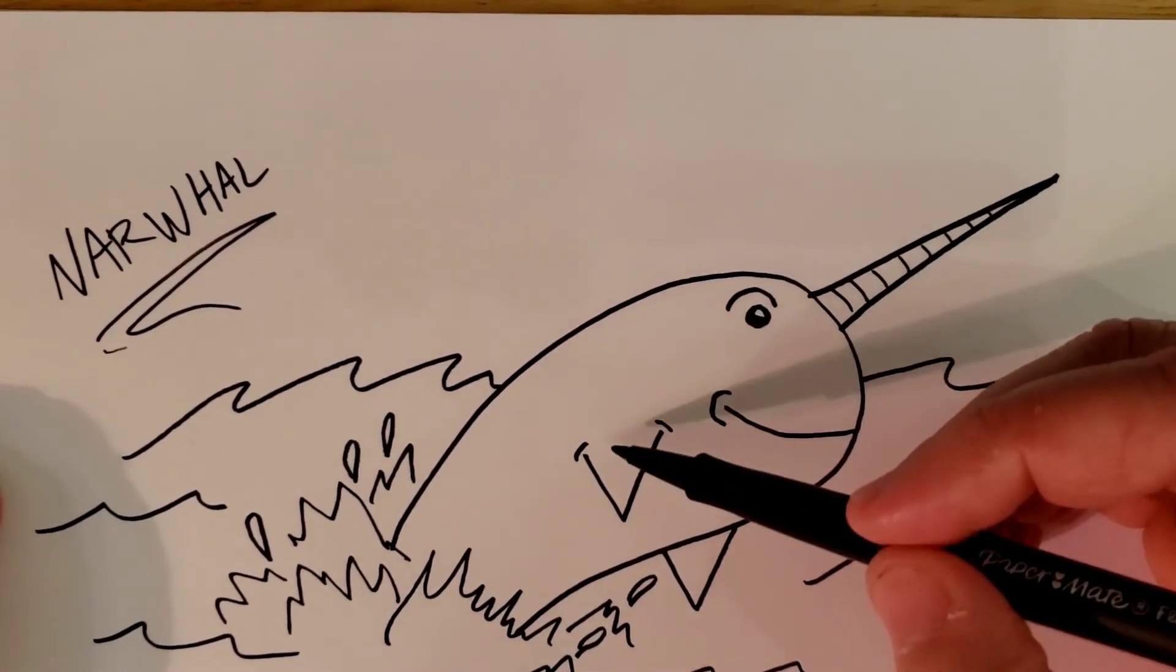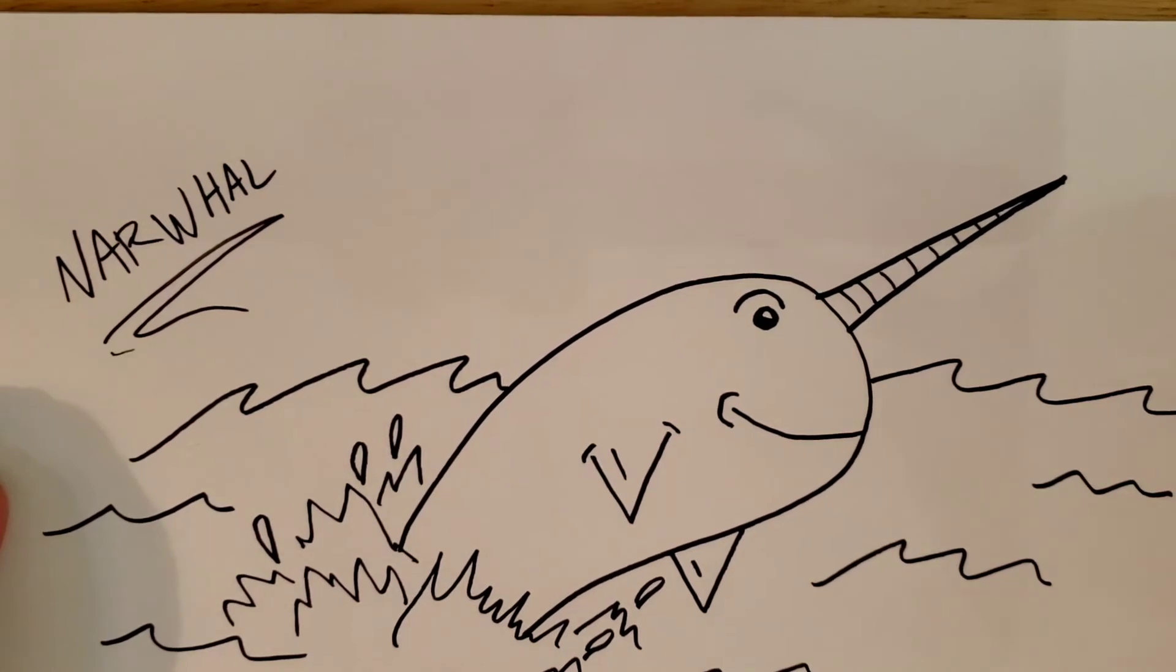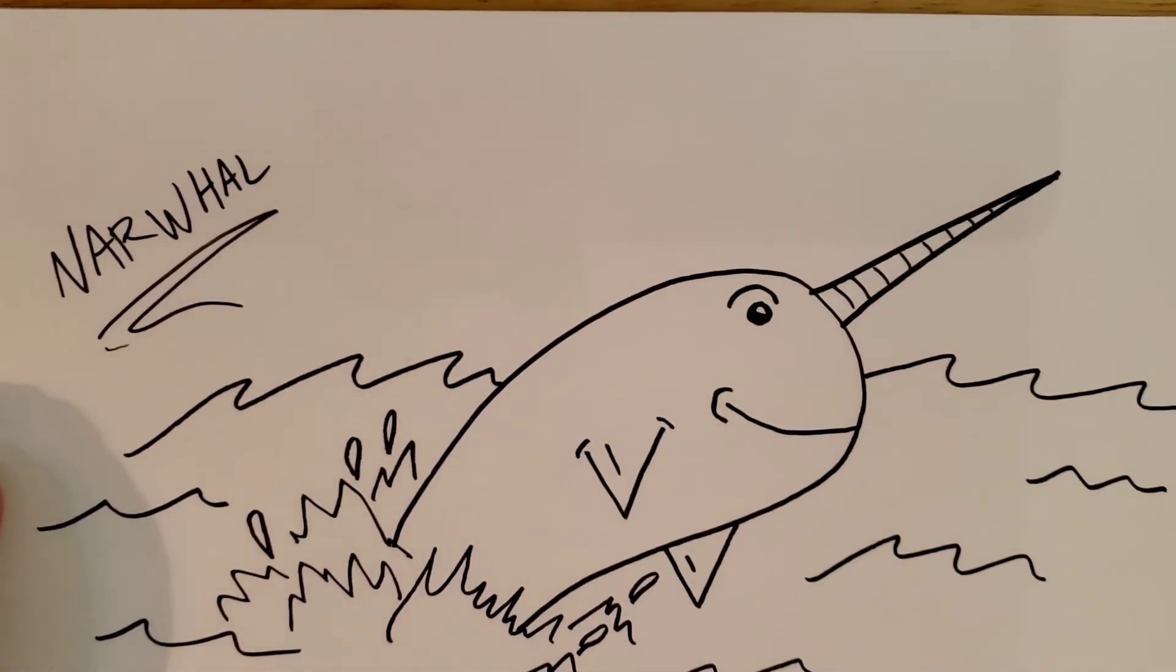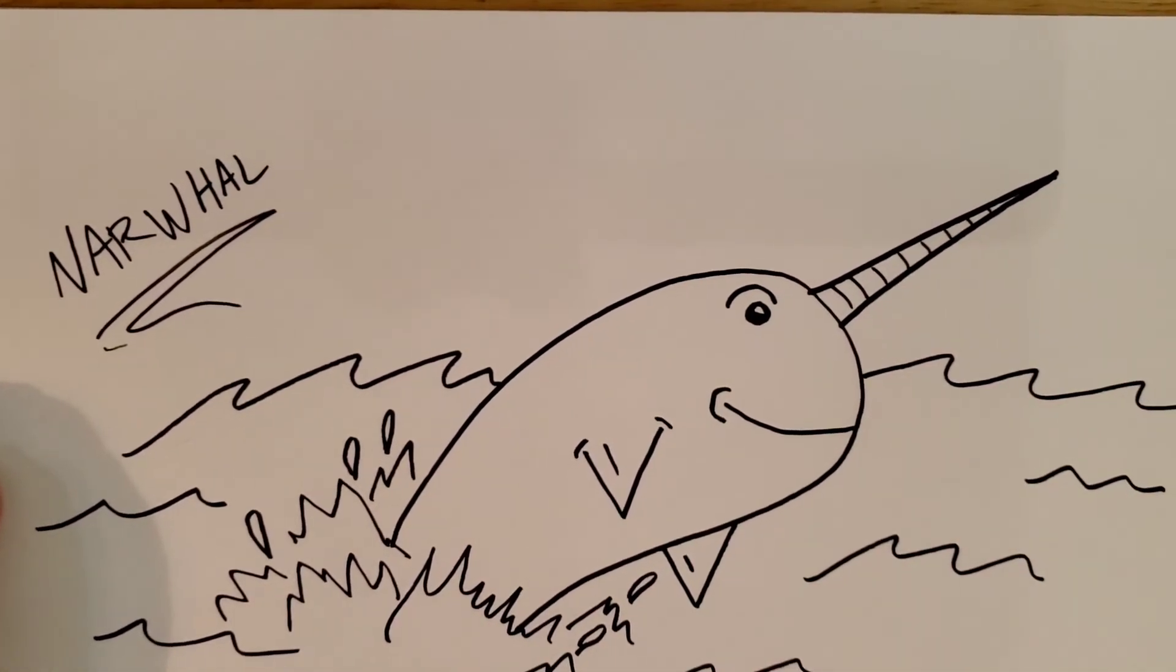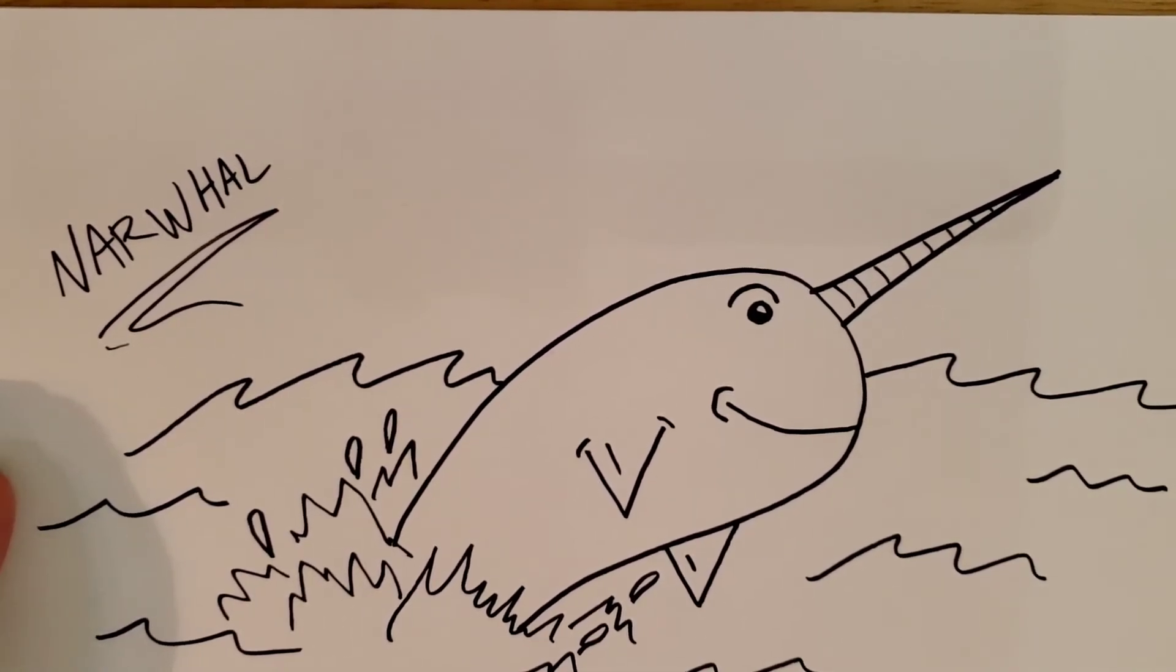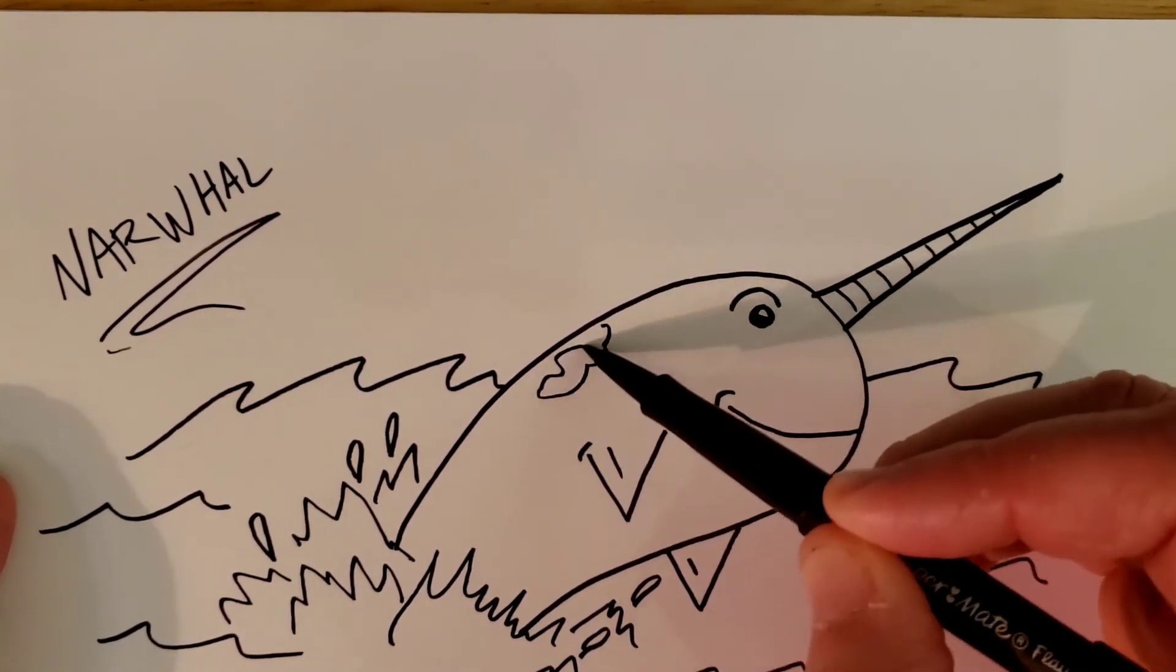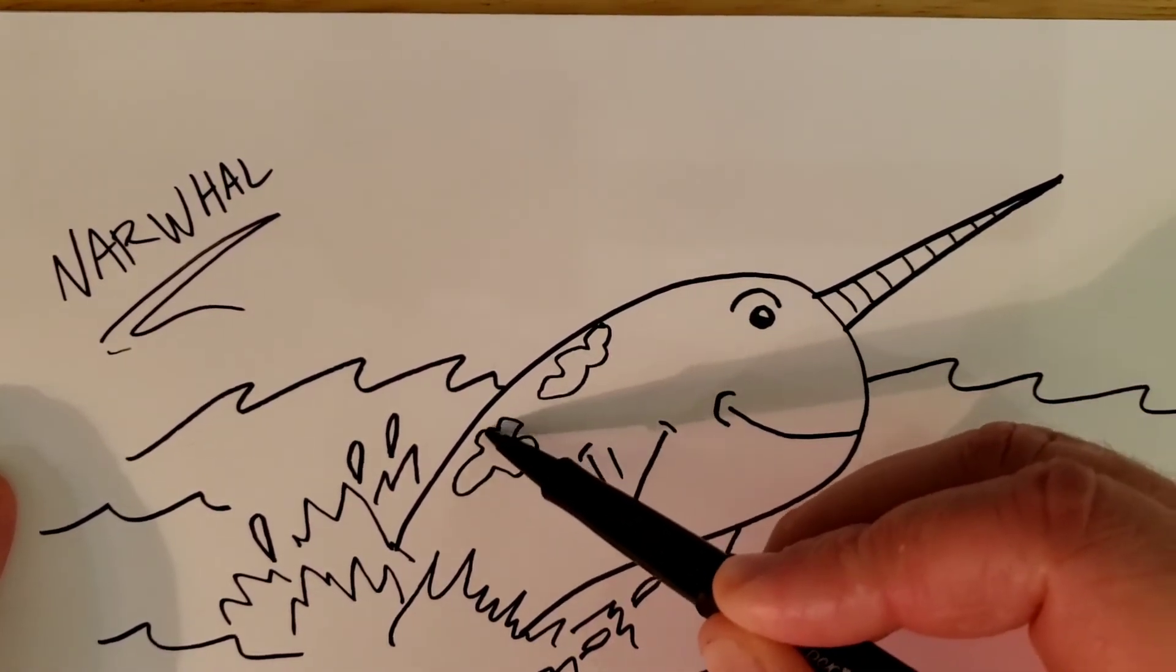We're going to come here and put a little line in the fin here, little line in the fin there. Some narwhals—or nor-whals, however you want to say it—some people say narwhal, some people say nor-whal. They have little spots on them.